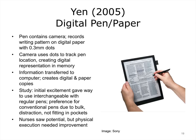Yen studied the use of digital pen and paper by nurses. The digital pen and paper consisted of a pen with a camera, which uses the pattern of 0.3 mm dots on special paper to track the pen location and create a digital representation in memory. This information is later transferred to a computer, and dual digital and paper copies are created simultaneously. Initial excitement gave way to nurses using them interchangeably with regular pens, often choosing whatever was most handy. The digital pens were bulkier than regular pens and could not fit in pockets, and the system required more development.